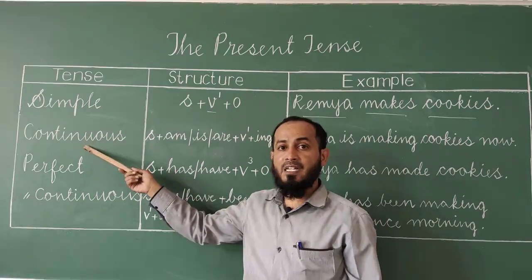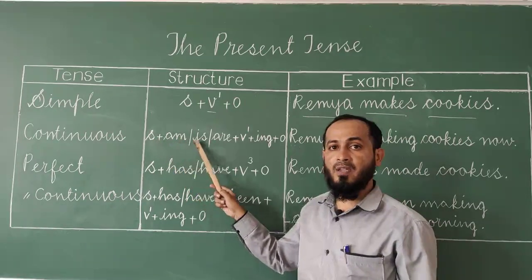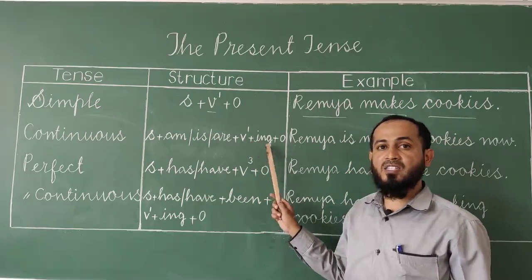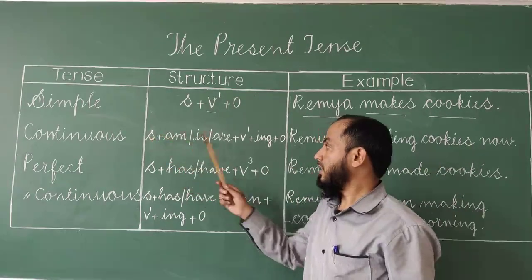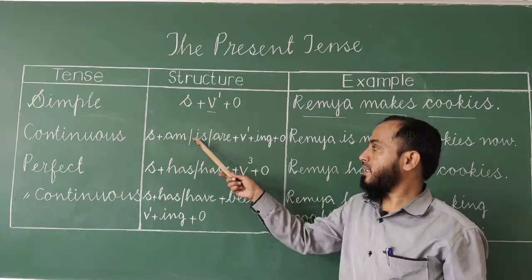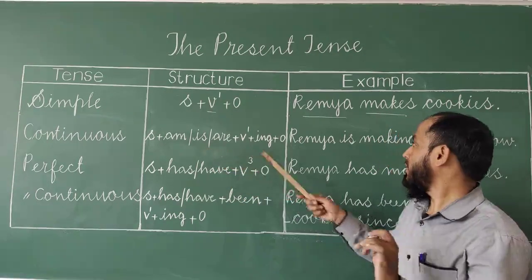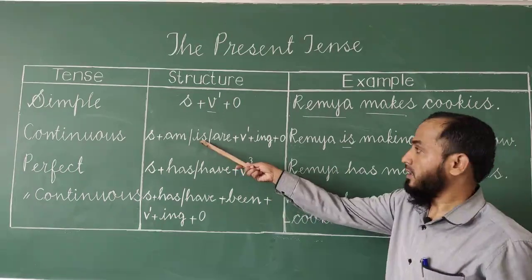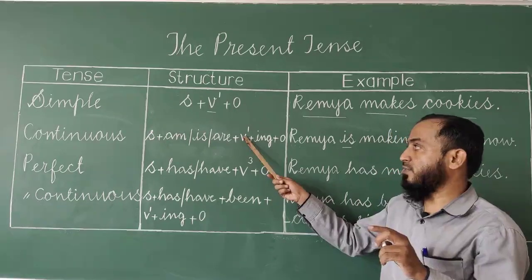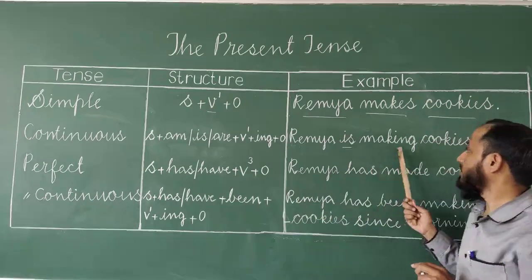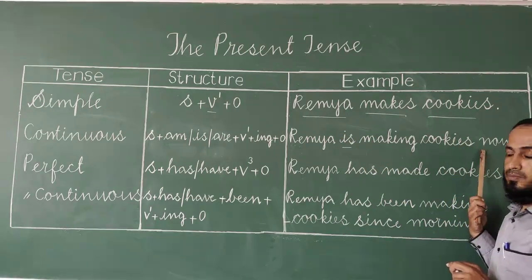For continuous tense, the formula is: subject plus am/is/are plus V1 plus ing plus object. For example, 'Remia is making cookies now.' Remia is the subject, is is chosen from am/is/are as appropriate, making is V1 plus ing (make plus ing), and cookies now is the object.